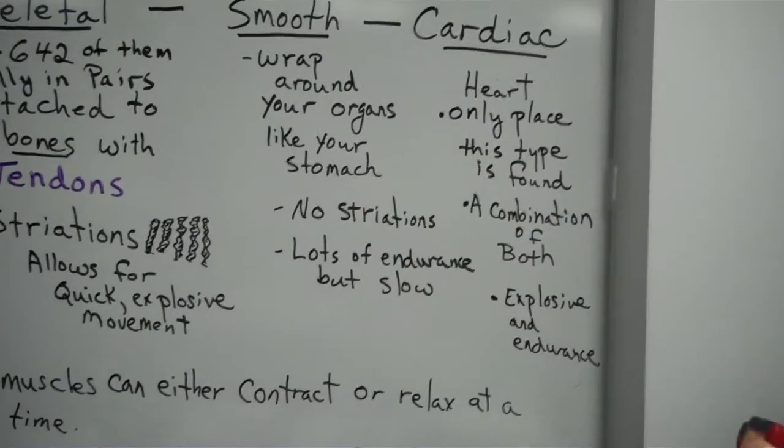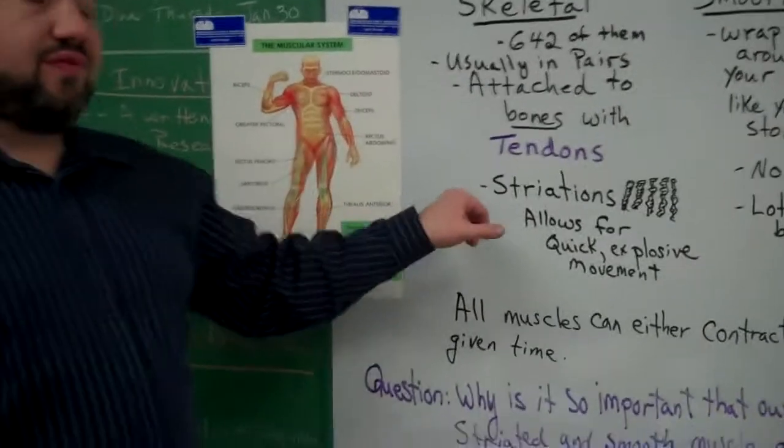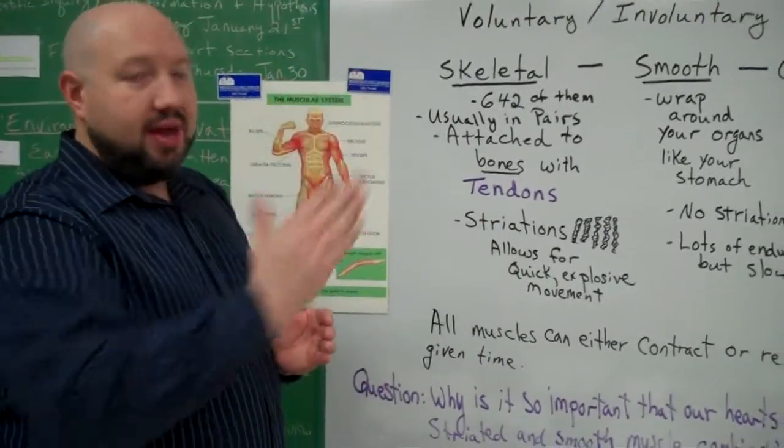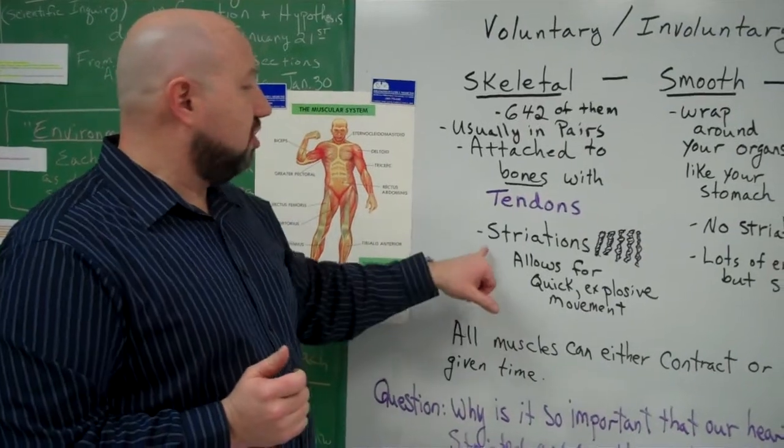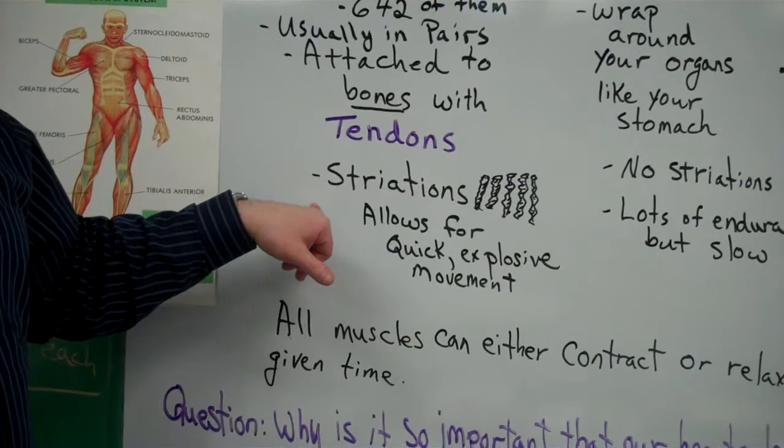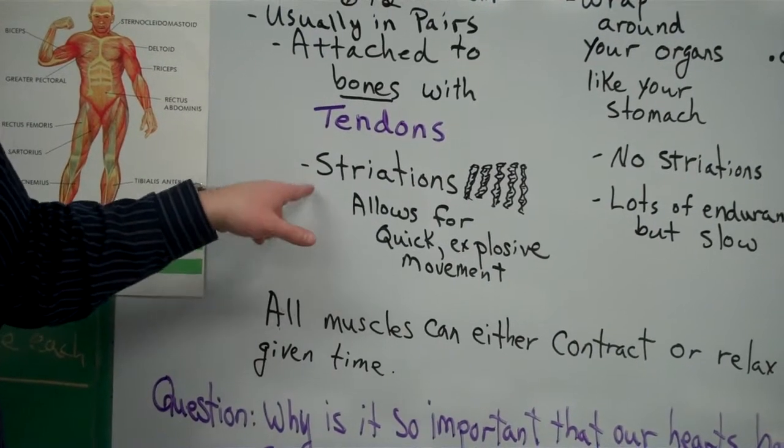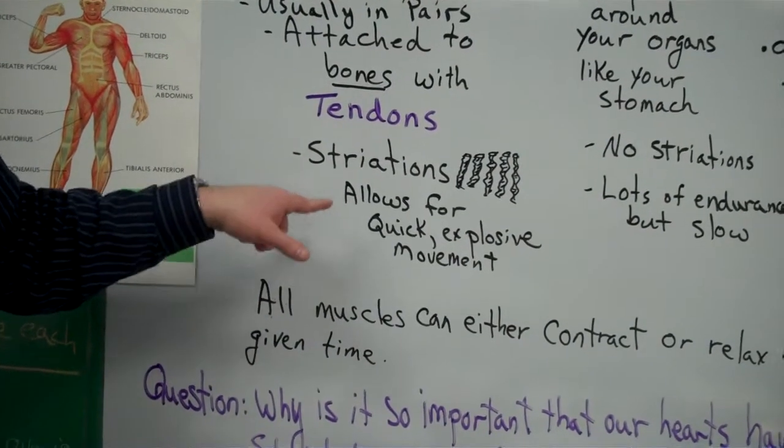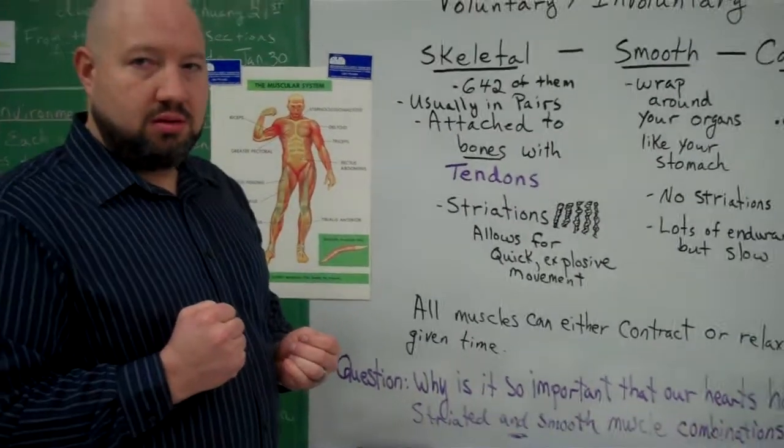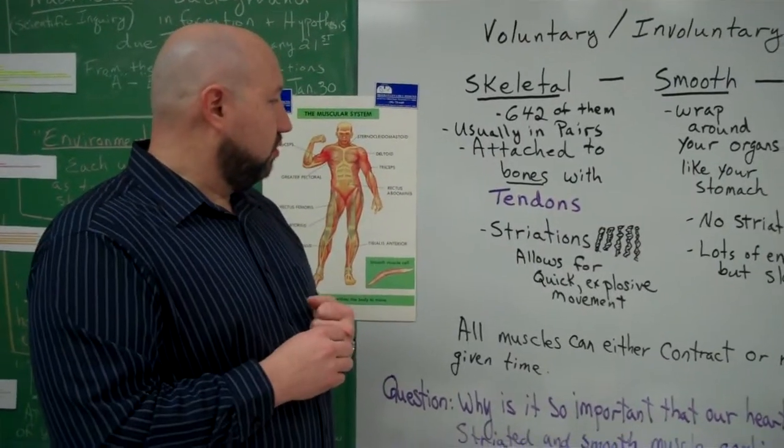Alright. So, you want to tell them about the striations? Now, hopefully you've seen a steak before. And you can see the little bands in the steak. Those bands are called striations. Okay. Skeletal muscle has striations. It has these bands. Okay. What these bands do is allow for quick explosive movement. Okay. It's almost like a spring in the way that it moves.